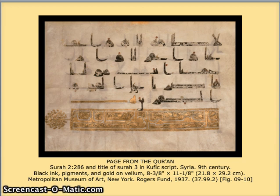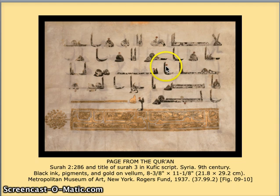Often these books would just have four or five lines of type on the page because they're designed to be read by many people gathered around. It's got gold at the bottom, which is kind of interesting. And if you can see these little red dots, they're actually pronunciation guides. Another interesting thing is that in Islamic cultures, people read from the right to the left — opposite of how we read.